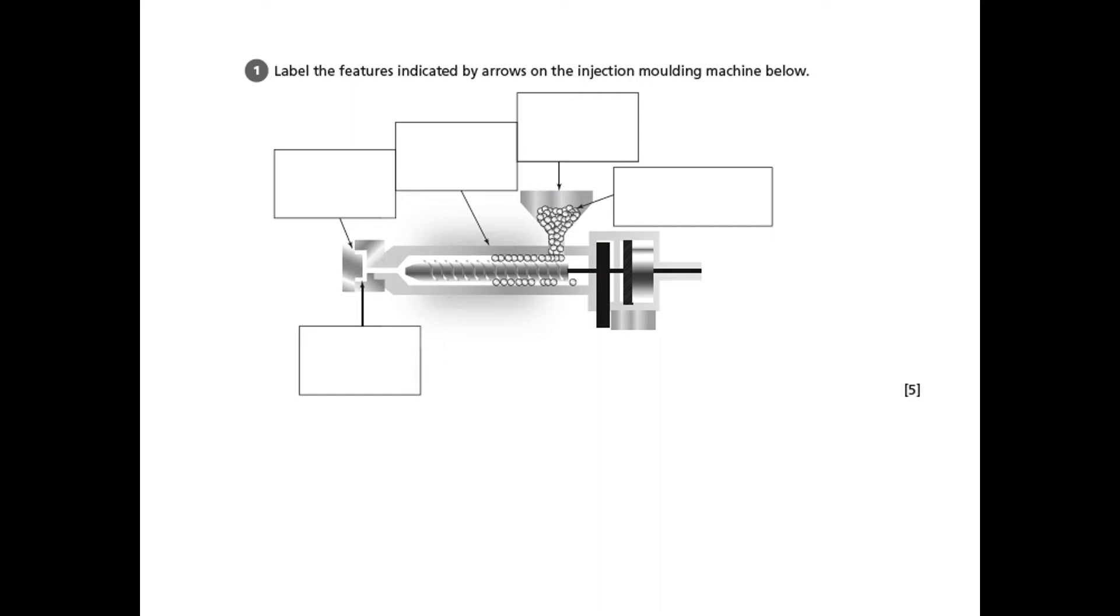As with all of these, we get drawn into the diagram, but it's worth reading the text at the top. The command word here is label, and we need to label the features indicated by the arrows on the injection molding machine.